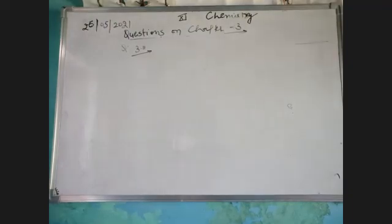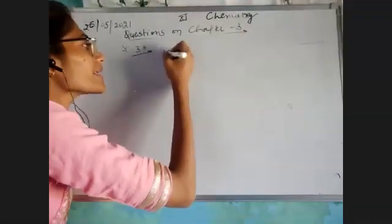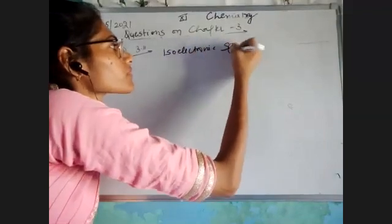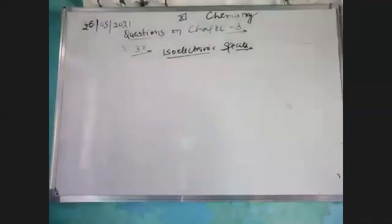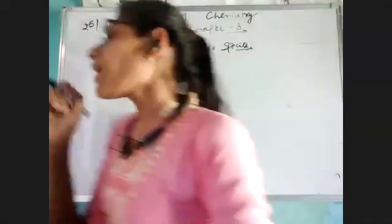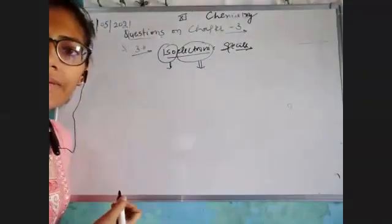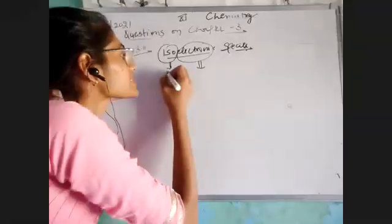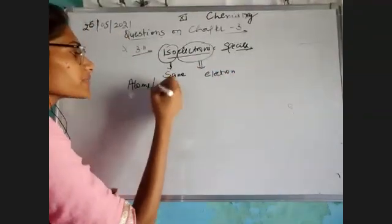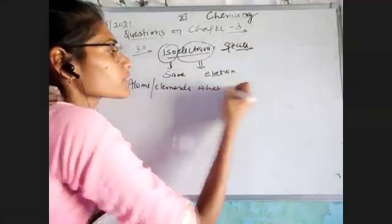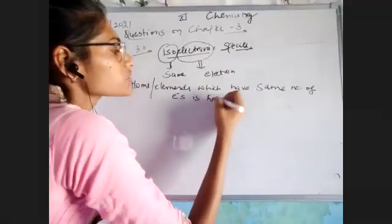Question 3.11 asks: what do you mean by isoelectronic species? Isoelectronic is made up of two words: iso and electro. Iso means same, and electro refers to electrons. So, the species, atoms, or elements which have the same number of electrons are known as isoelectronic species.